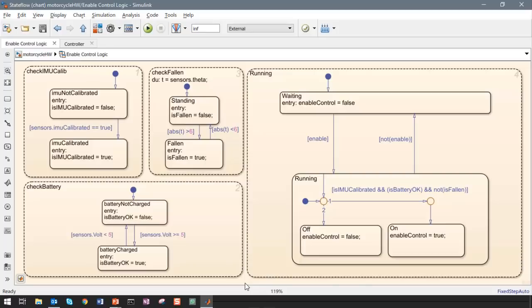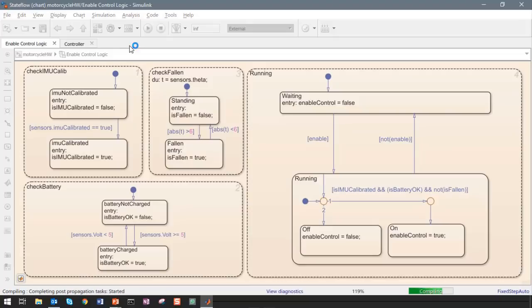With Simulink, you can deploy the standalone algorithm on the hardware with a single click of a button. You can also run this model in what is called external mode to monitor signals and tune parameters in real-time while the algorithm is running on the hardware. With the model set to external mode, click on the run button to automatically generate code for the model and download it to the hardware. This simulation mode establishes a communication interface back to our Simulink model so we can monitor the signals from the hardware in the model and also tune the parameters that is running on our hardware.